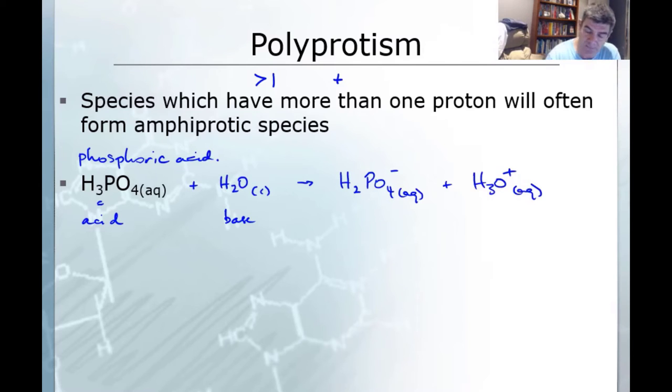So that's the first one. Then there would be a second ionization which would involve the H2PO4 minus. Again if we put that with water, with water acting as the Bronsted-Lowry base, then we would have HPO4 2 minus aqueous and another H3O plus aqueous.